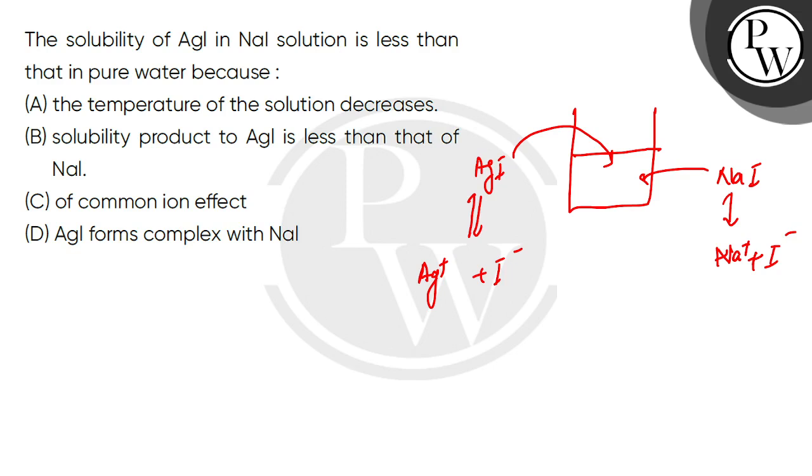Dissociated and undissociated forms are in equilibrium. So we are saying that AgI solubility in NaI solution is less than that in pure water. Now you are going to have a common ion.